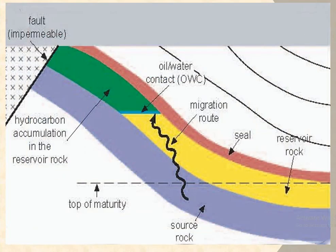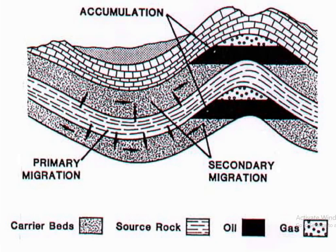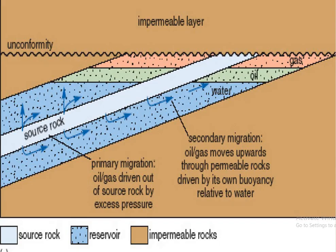This schematic diagram represents hydrocarbon accumulation in the reservoir rock, showing the top of maturity, source rock, transport migration, and accumulation in over-traps. It also shows primary and secondary migration and accumulation in anticlinal formations, with source rock, reservoir rocks, and impermeable rocks labeled.